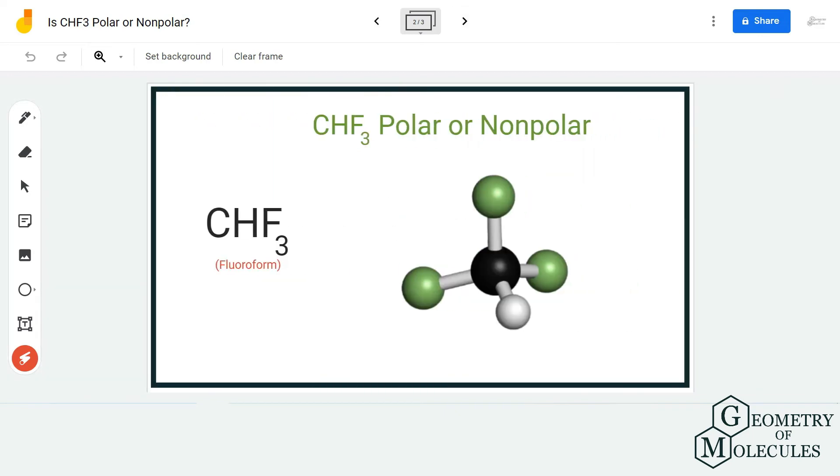The most electronegative atom tries to pull the shared electrons towards itself. The fluorine atom will try to do the same by pulling the shared electrons towards itself, which results in a net dipole moment in this molecule.